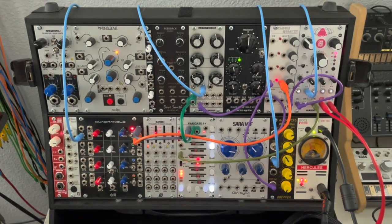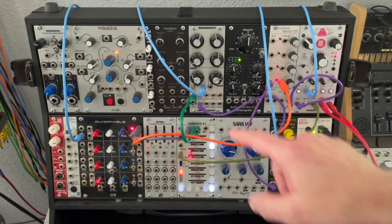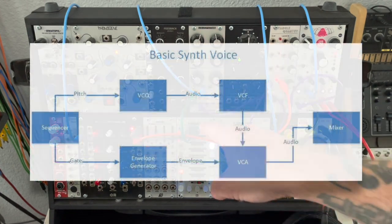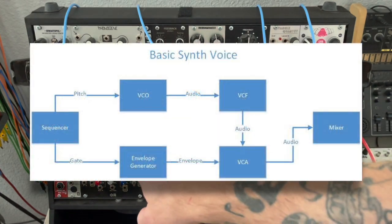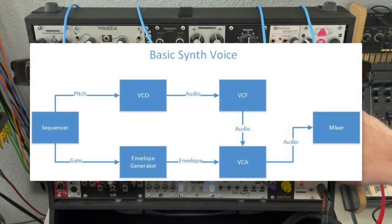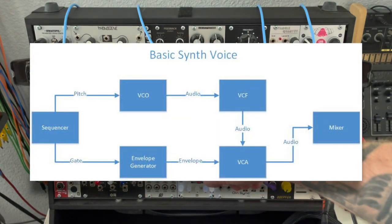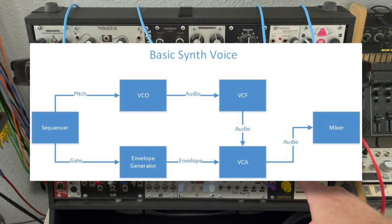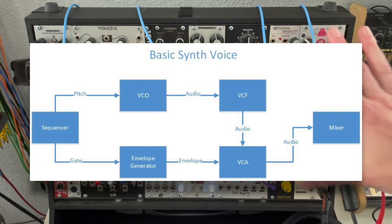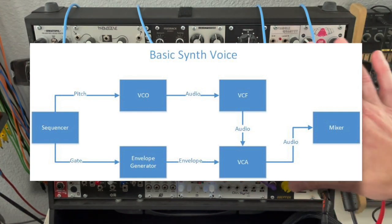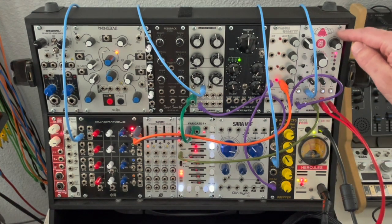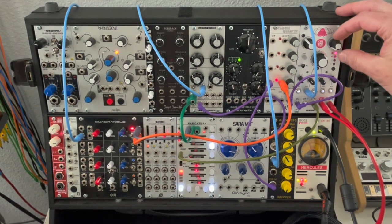So if I hit start on the sequencer here, we've got our pitch going to our oscillator, and our gate going over here to our envelope. Our envelope is controlling the VCA, and our output from the oscillator going into a low-pass filter and then into the VCA. Same basic thing we've patched up in the last several videos. Only we've added this module here on the end — this is a delay.